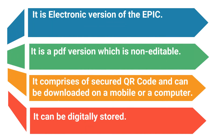What is eAPIC? It is the electronic version of the Electoral Photo Identity Card. It is a secure PDF version that is non-editable — PDF stands for Portable Document Format. The eAPIC comprises a secured QR code along with the image and demographics, including the serial number and part number.